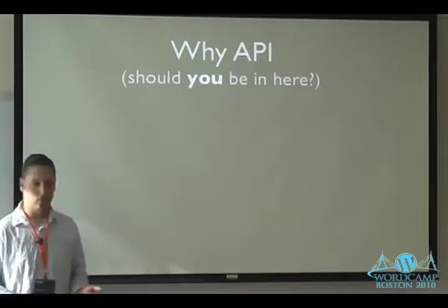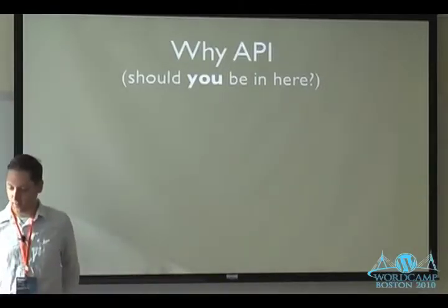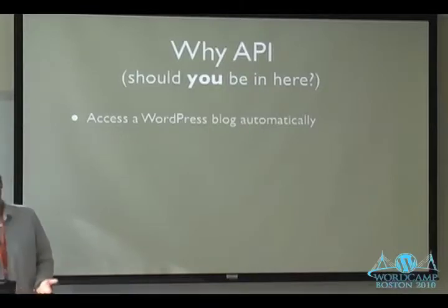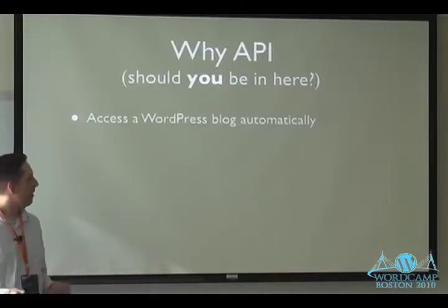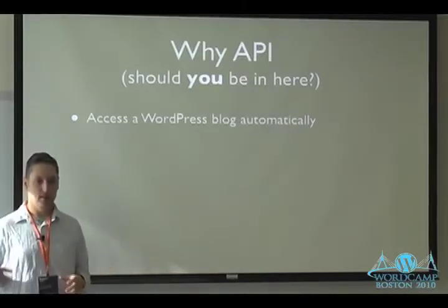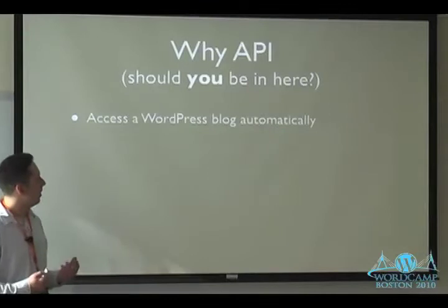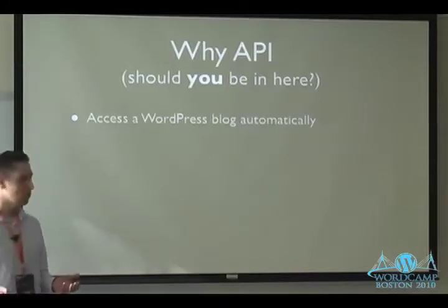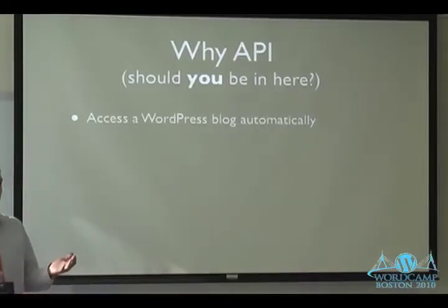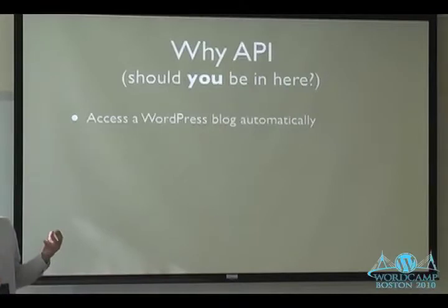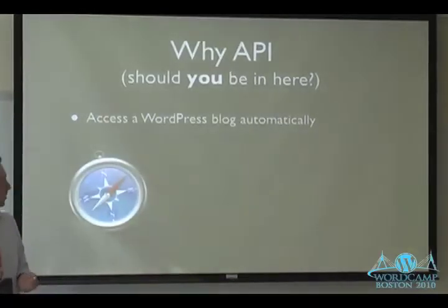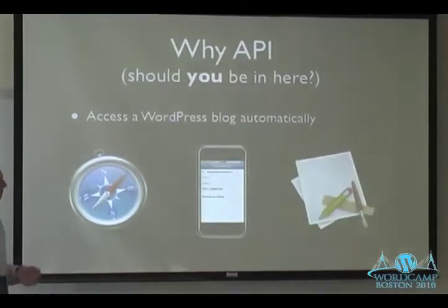So why should you be here? Why would you possibly be interested in the API in WordPress? Well, the API, if you don't know, is basically a mechanism in every WordPress installation that you can enable that allows stuff outside of the blog to access the blog automatically. APIs are useful for running other code elsewhere that can do things to take advantage of your WordPress installation, maybe inside the WordPress blog, or maybe taking the data out and putting it on a website. The WordPress API is used by web applications, mobile applications like on the iPhone, and on desktop applications.